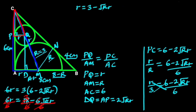Let's also replace the radius of the semicircle with 3, so that r equals 3 minus √(3r), which can also be written as √(3r) equals 3 minus r.